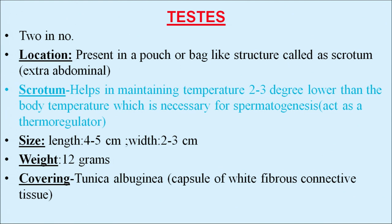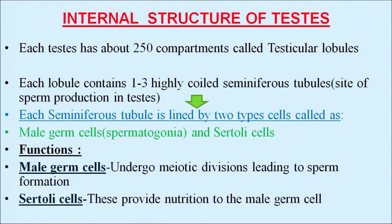The covering of the testes is called tunica albuginea, which is a capsule of white fibrous connective tissue. Each testis has about 250 compartments called testicular lobules, and each lobule contains one to three highly coiled seminiferous tubules, which are the site of sperm production. Each seminiferous tubule is lined by two types of cells: male germ cells, also called spermatogonia, and Sertoli cells.